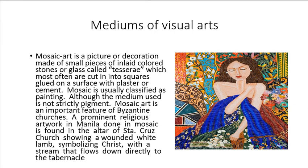The next medium is mosaic art. Mosaic is a picture or decoration made of small pieces of inlaid colored stones or glass called tesserae, which are often cut into squares and glued on a surface with plaster or cement. A mosaic is usually classified as painting, although the medium used is not strictly pigment. Mosaic art is an important feature of Byzantine churches. A prominent religious artwork in Manila done in mosaic is found in the altar of Santa Cruz Church. Other materials used in mosaic include eggshells and sand — it is not necessarily glass cut into squares.